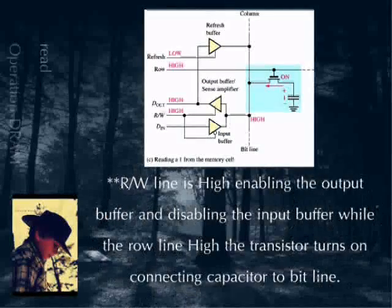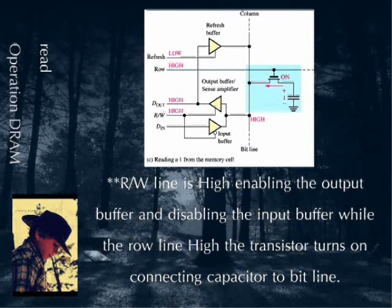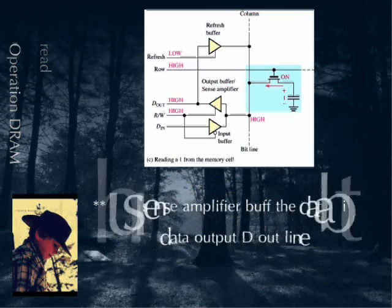The RW line is high, enabling the output buffer and disabling the input buffer. While the row line is high, the transistor turns on, connecting the capacitor to the bit line.